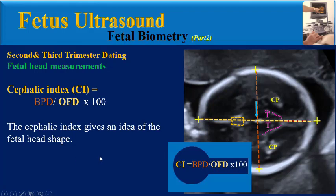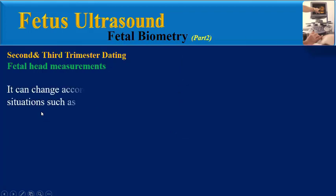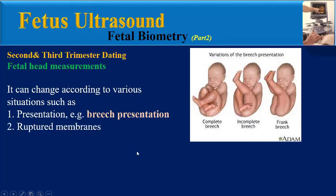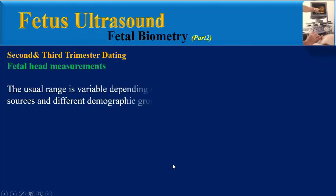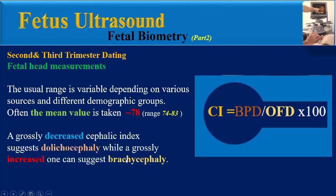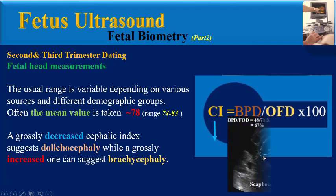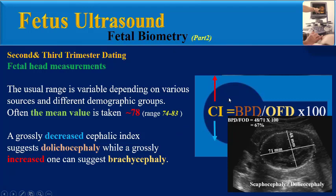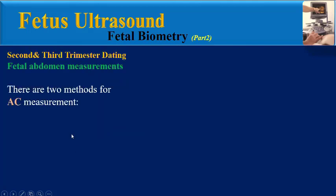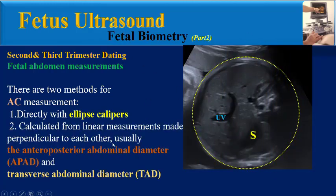Another index of fetal head measurements is the cephalic index: CI = (BPD / OFD) × 100. The cephalic index reflects fetal head shape and can vary with presentation (e.g., breech presentation), ruptured membranes, and twin pregnancy. The usual mean value is 78, with a range of 74 to 83. A grossly decreased cephalic index suggests dolichocephaly, while a grossly increased one can suggest brachycephaly.